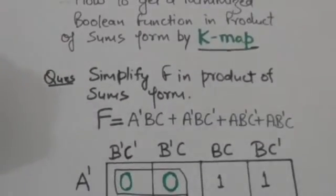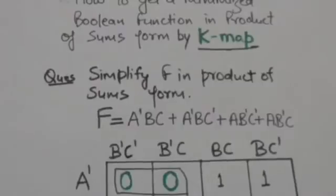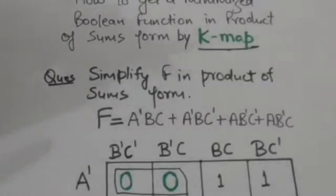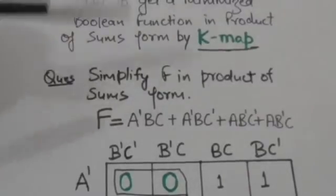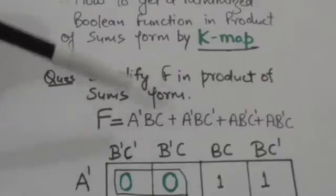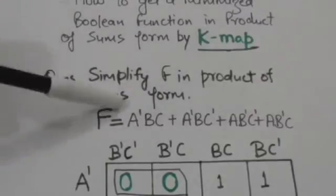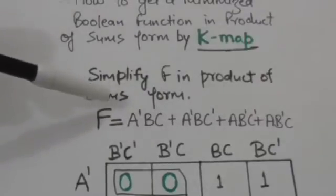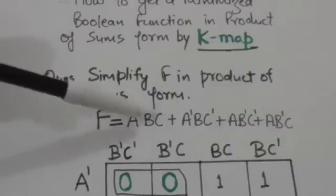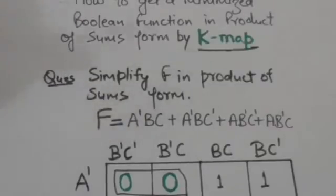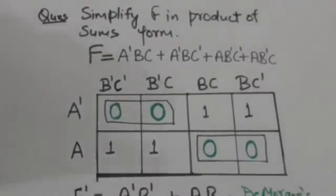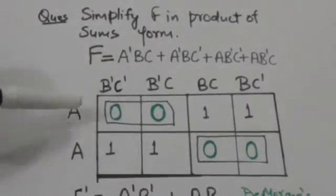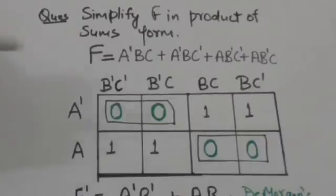So first of all we will make a K-map for three binary variables a, b, and c, because this function f is formed of three binary variables a, b, and c. Here I have made a K-map for three binary variables a, b, and c. Now we have to represent this function f in this K-map.